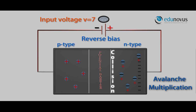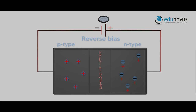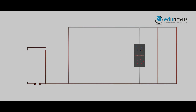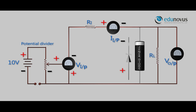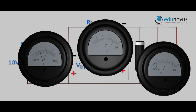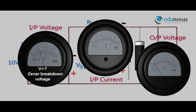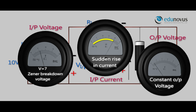Now, to study the characteristics, we connect the zener diode as per the circuit diagram. Then, we gradually increase the input voltage and observe the changes in the input current and output voltage. Initially, a small amount of input current flows, and then it increases suddenly at the zener breakdown voltage. However, the output voltage remains constant.